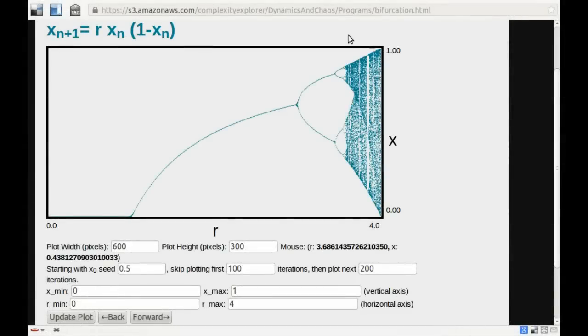There are a few more features of the bifurcation diagram that I'd like to explore. Here we are back at the starting point. I'll zoom in again on roughly 3 to 4.